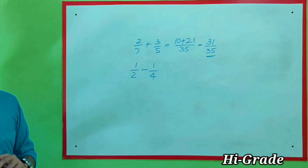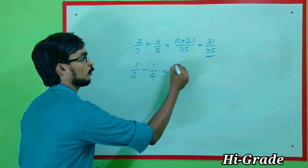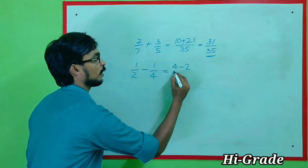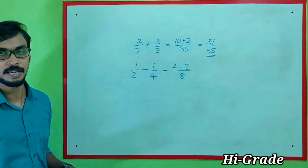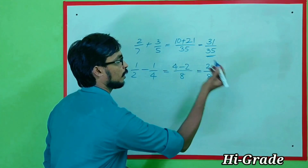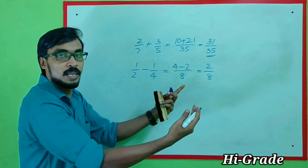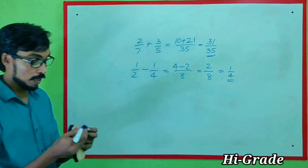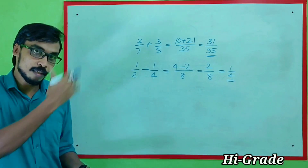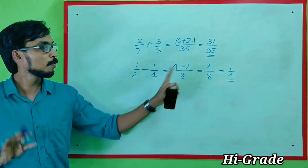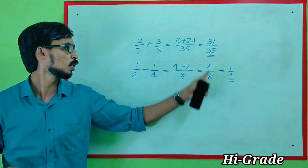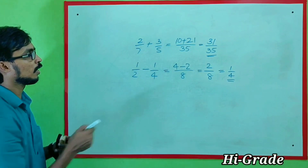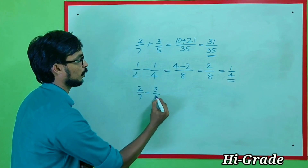Subtractions — now: 1 into 4 minus 2 into 1. 2 divided by 2 into 4 is 4 minus 2, equals 2 by 8. Now we will change the formula — 2 by 8. We will write the numerator and denominator.